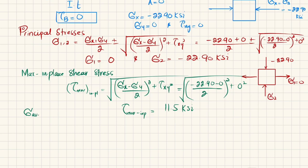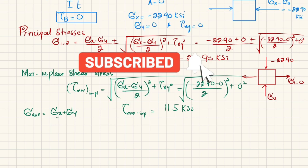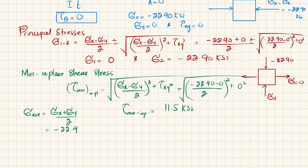The average normal stress is: sigma_avg equals (sigma_x plus sigma_y) divided by 2 equals (minus 22.90 plus 0) divided by 2, which equals minus 11.5 ksi. Now we find the orientation of the maximum in-plane shear stress.